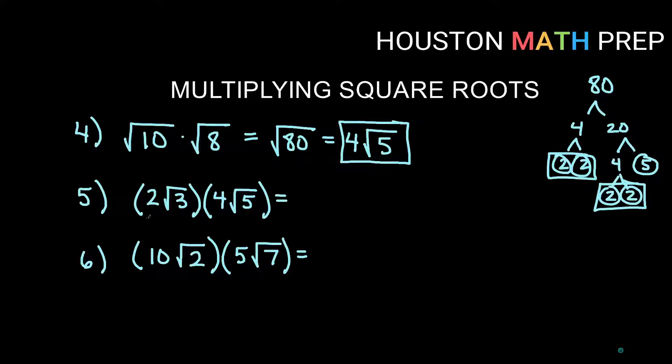For number 5 here, I have numbers that are outside and inside and everything's multiplied. So I simply multiply outsides together and insides together. So on the outside, 2 times 4 is going to give us 8. And on the insides, 3 times 5 is going to give us 15. I would look and see if I can simplify this, but it turns out 15 will not simplify as a square root.